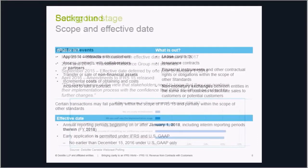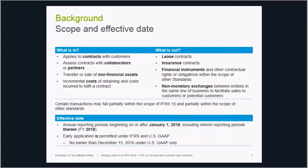IFRS 15 includes specific scoping considerations that may present differences with existing guidance. The scope covers all contracts with customers, with the exception of leasing contracts, insurance contracts, financial instruments or other contractual rights, and non-monetary transactions between entities in the same line of business. The transfer of control guidance must also be applied to transfers of non-financial assets. Notably, IFRS 15 has a broadened scope — it addresses not only revenue recognition but also contract costs: incremental costs of obtaining a contract and costs of fulfilling a contract.